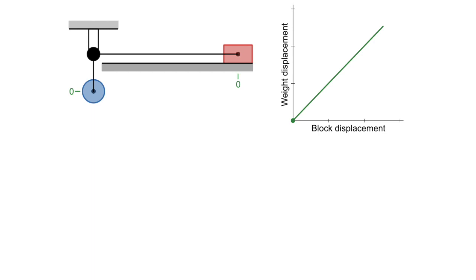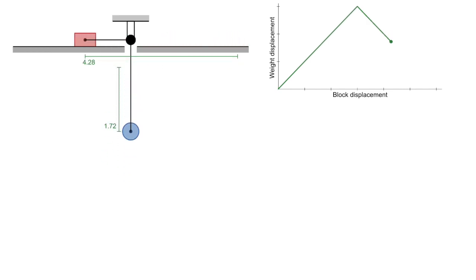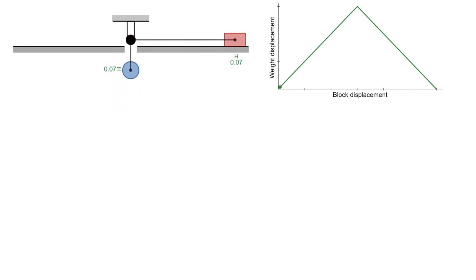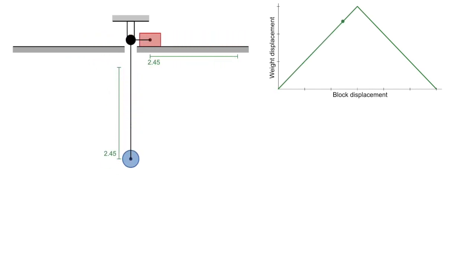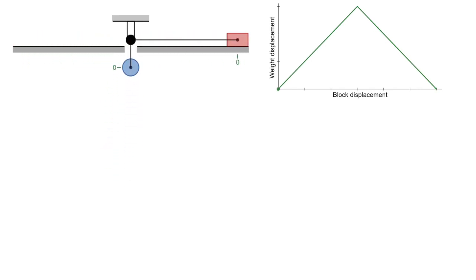First though, are the accelerations really always equal? What if we allow the block to continue sliding to the other side of the pulley? All of a sudden the weight changes direction and starts heading upwards. It experiences an instantaneous change of direction while the block does not.